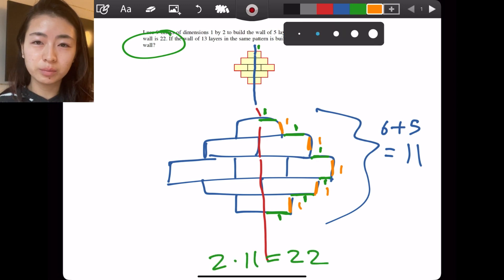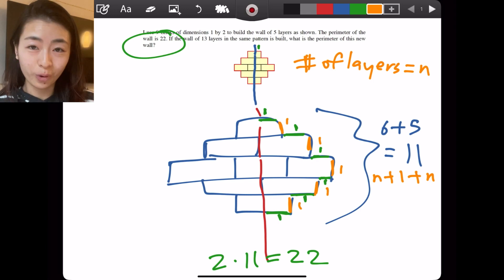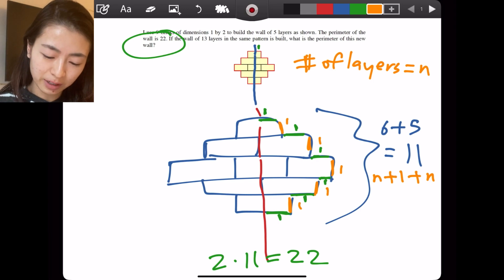So from this example, maybe I can guess that one side will be the number of layers. So number of layers equals n. I'm going to guess that this is n plus one plus n for one of the sides. That's because we have six, which is n plus one. And then we have five, which is n.